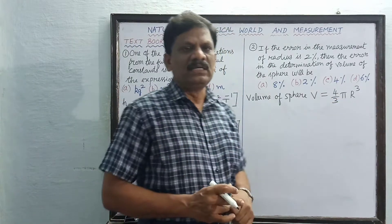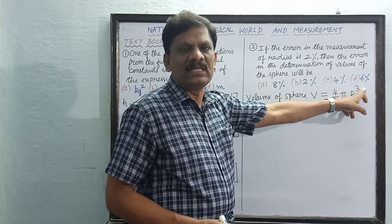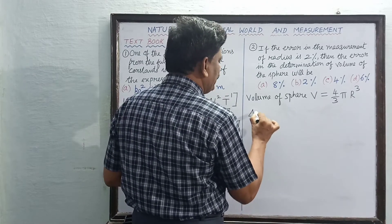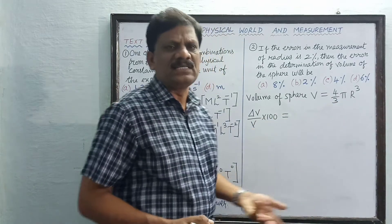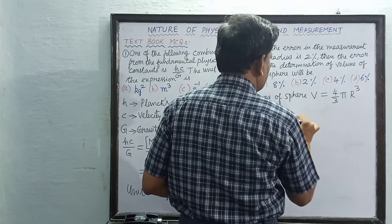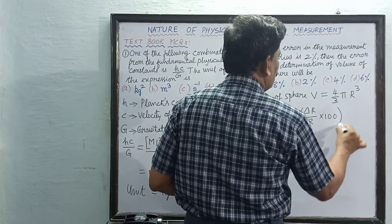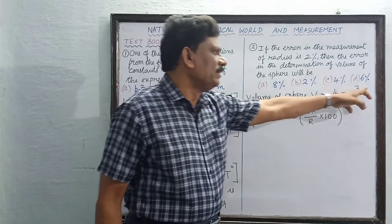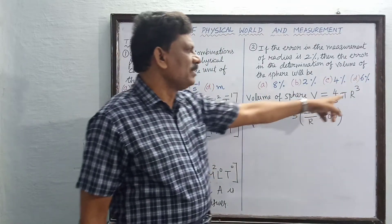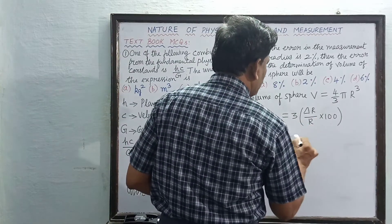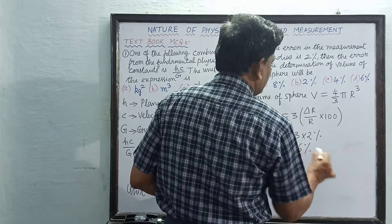We apply the rules to calculate percentage error. Since radius is raised to the power 3, the percentage error in volume is given by ΔV/V × 100 = 3 times the percentage error in R, that is 3 × (ΔR/R × 100). The rule is: if N is the power, multiply N times the percentage error in the given quantity. So this equals 3 × 2 percent = 6 percent.